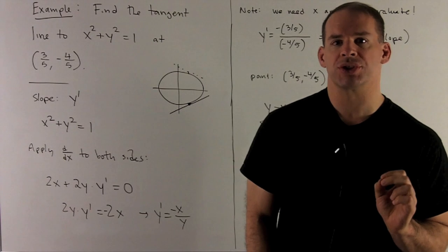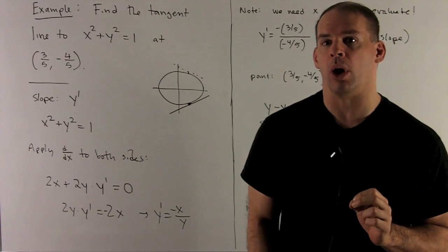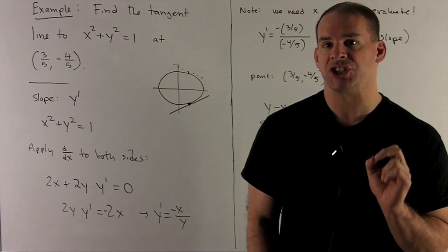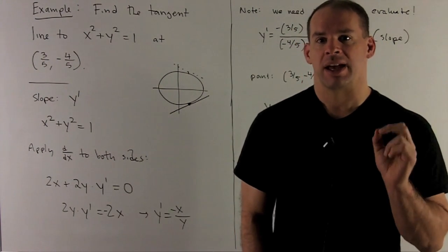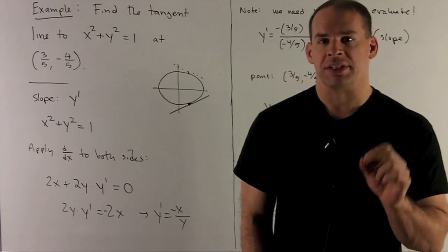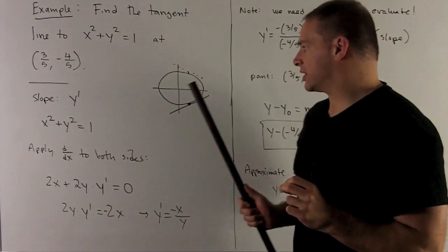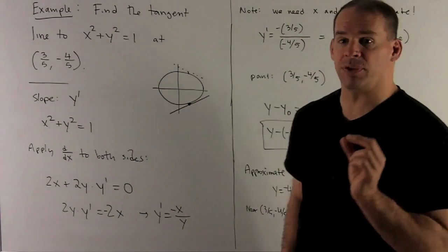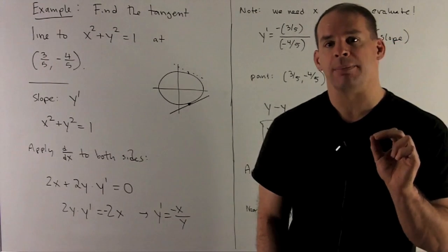Let's look at an example. We have the unit circle which is defined by the equation x² + y² = 1. Let's find the tangent line to the unit circle at the point (3/5, -4/5). In this case, note it's not enough for me to just give you x = 3/5 or we'll get stuck with two possibilities for the tangent line.